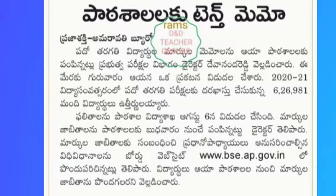This is www.bse.ap.gov.in — this is the website. The link is in the description. You will enter your hall ticket number, date of birth, and select the year. Then enter the captcha and you will get the mark list.